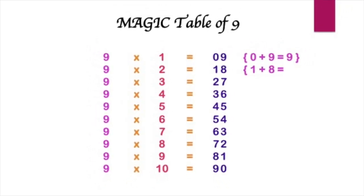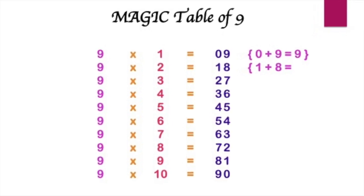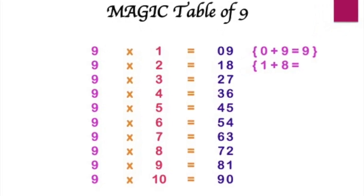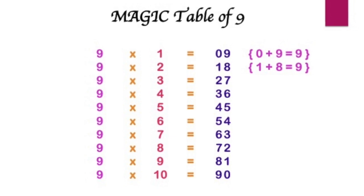Now, can you tell me, what's the sum of the digits of the second multiple? That's right, 1 plus 8 is again a 9.